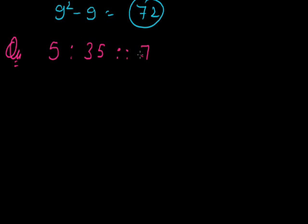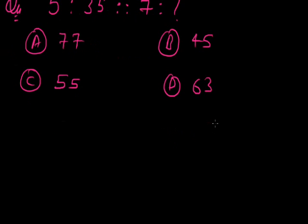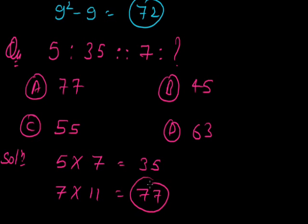Next question: 5:35::7:? Here option A, 77. Option B, 45. Option C, 55. Option D, 63. So in this question solution, here 5 is multiplied by next prime number that is 7. 5 multiplied by 7 is 35. As it is, 7 is multiplied by next prime number, that is 11 into 7, is 77. Answer is 77.